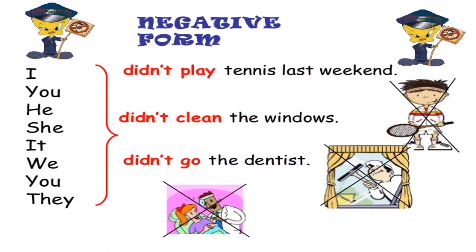How to change the sentence into negative form in simple past: you add 'did not.' For all seven pronouns — first person: I, we; second person: you; third person: they, he, she, it — you use 'did not' for all. For example, 'I did not play tennis last weekend.' 'She did not clean the windows.' 'We did not go to the dentist.' So 'did not' changes the sentence into negative form.